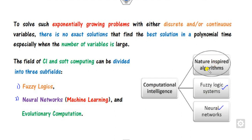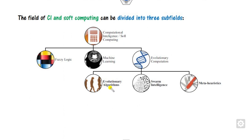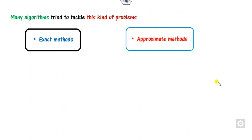Nature-inspired algorithms or evolutionary computation is again divided into three categories. Computational intelligence or soft computing is basically divided into fuzzy logic, machine learning (also called neural networks), and evolutionary computation. This evolutionary computation is further divided into three portions: evolutionary algorithms, swarm intelligence, and meta-heuristic techniques. In order to solve any problem, there are two methods: exact methods and approximate methods. The approximate method is called computational intelligence and soft computing.